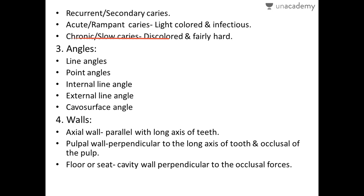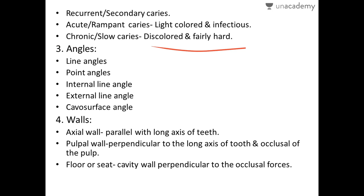Acute or rampant caries: acute processes are the most symptomatic, and rampant caries progresses aggressively. Clinically, the dentine affected is light-colored and always infected. In contrast, chronic or slow caries progresses slowly, induces little or no pain, and is discolored and fairly hard — hard to remove even — with no pain on excavation.